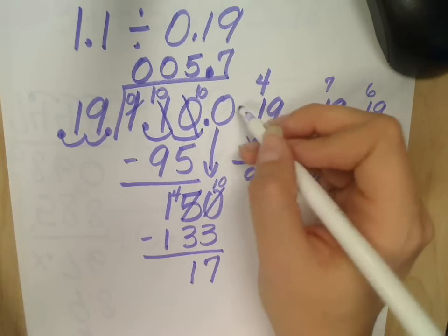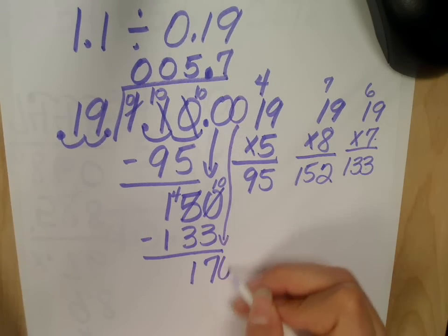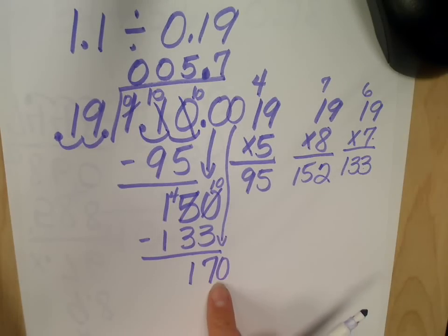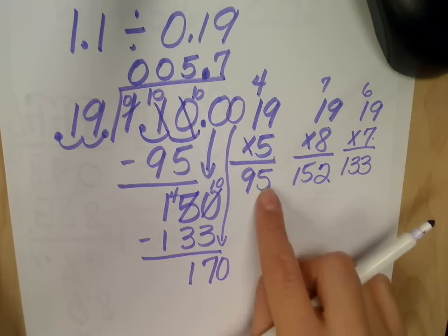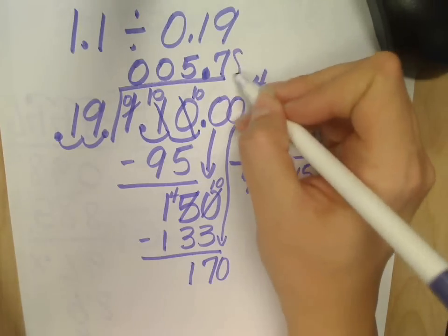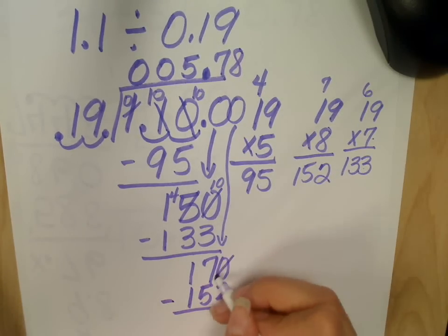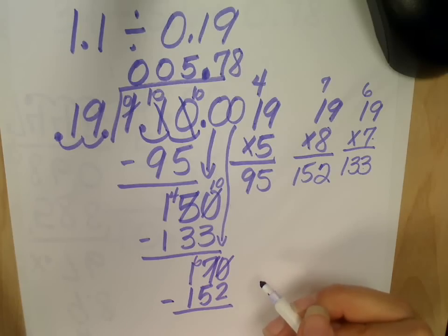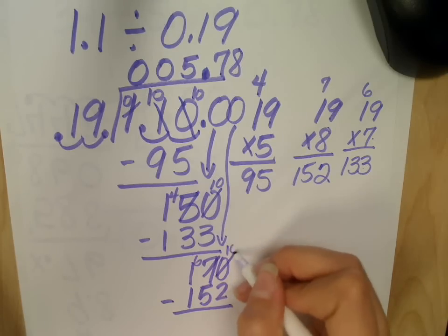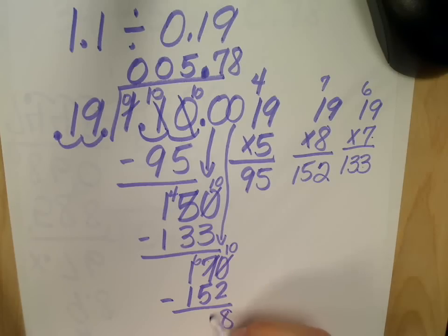So I'm going to add a zero. Hopefully I don't run out of room. Nineteen into one seventy. Let's look. I have eight, and nineteen times nine will be too much. So I would say eight times. And that's one fifty-two. Although I could be wrong here. Borrow from the seven, which becomes a six. Ten minus two? Eight. Six minus five? One. So eighteen. We were close.